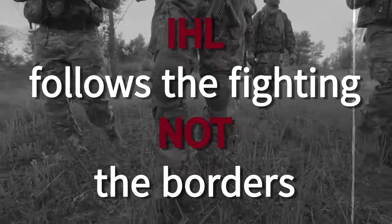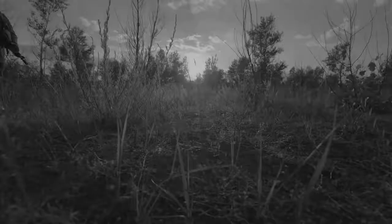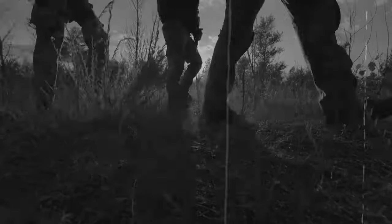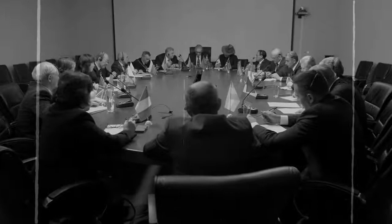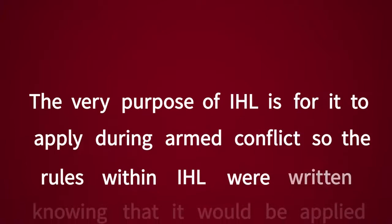Whether an armed conflict is of international nature, meaning between two or more nations, or of non-international nature, meaning between a government and an armed group within the borders of a single nation, the type of conflict is important, as the determination of international or non-international armed conflict plays a significant role in determining which specific aspects of IHL apply. There is no derogation from IHL. This means that even in an emergency such as war or a natural disaster, IHL still applies and cannot be suspended. In fact, the very purpose of IHL is for it to apply during armed conflict, so the rules within IHL were written knowing that it would be applied in some of the worst emergency conditions a nation would face.